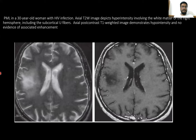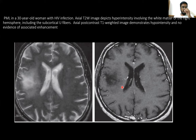Here is another case of PML in a 30-year-old woman with HIV infection. On axial T2 images, hyper-intensity involves the white matter of the right hemisphere, including the subcortical U-fibers. On axial post-contrast T1 image, the hyper-intensity is demonstrated with no evidence of associated enhancement.